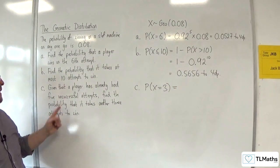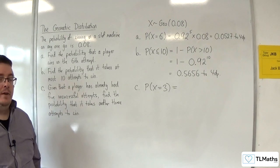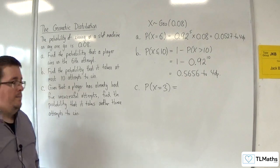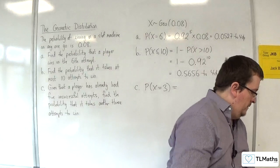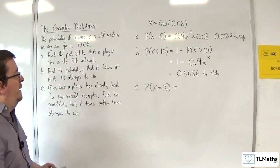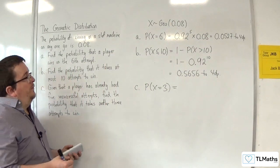So, that could have been 500 unsuccessful attempts. It doesn't matter. It doesn't matter what's come before, because the probabilities are independent.